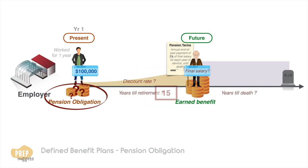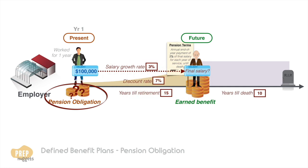So let's say you estimate that Jason will work for another 15 years until he retires, and that he'll live for 10 years after retirement. His salary is likely to grow by 3% each year, and the discount rate is 7% per year. So based on his starting salary of $100,000, he'll have a final salary of $155,797 when he retires. Based on the formula for the benefit plan, he has earned in his first year of work a benefit of $1,558 for each year in retirement for 10 years until death.